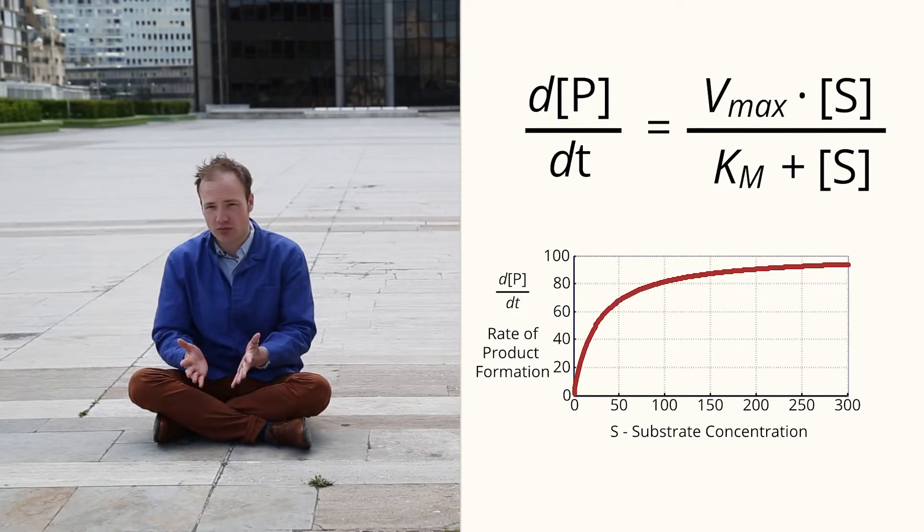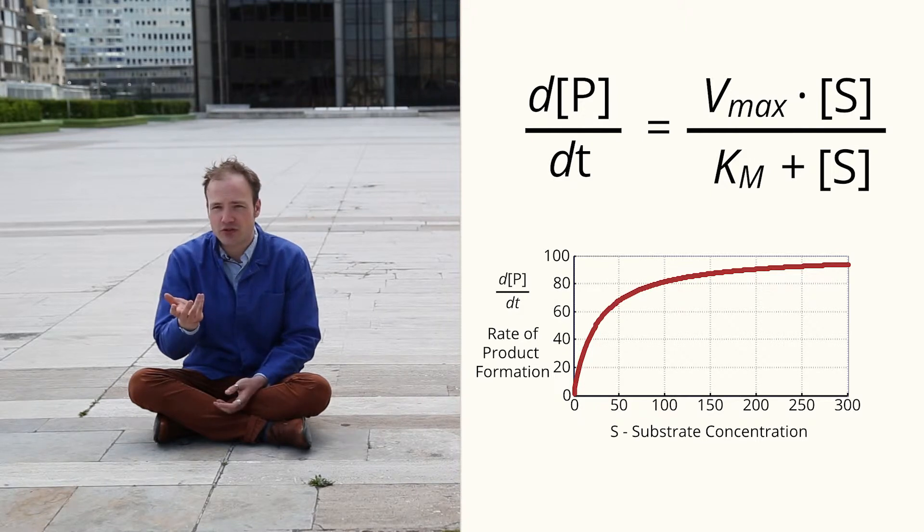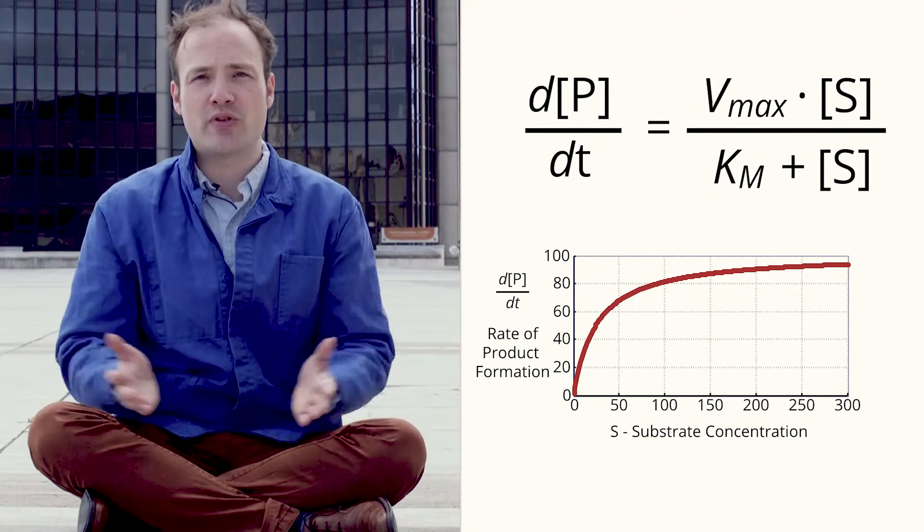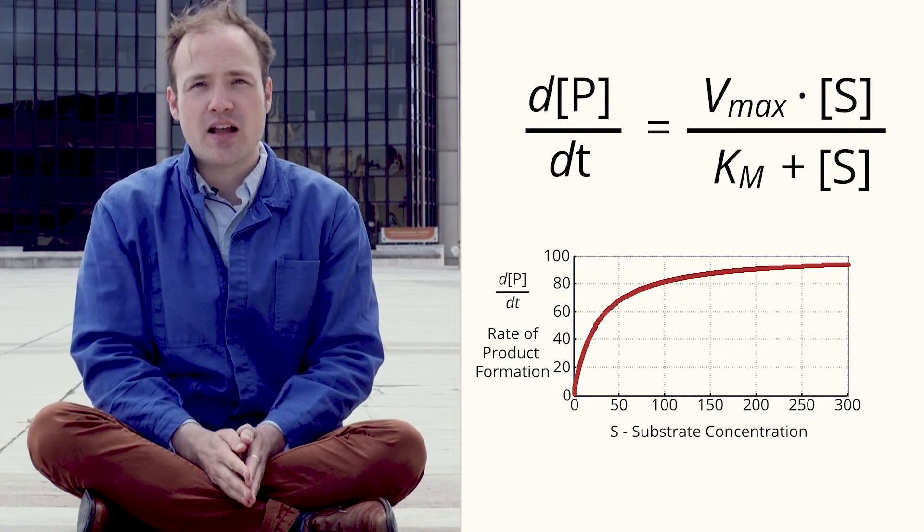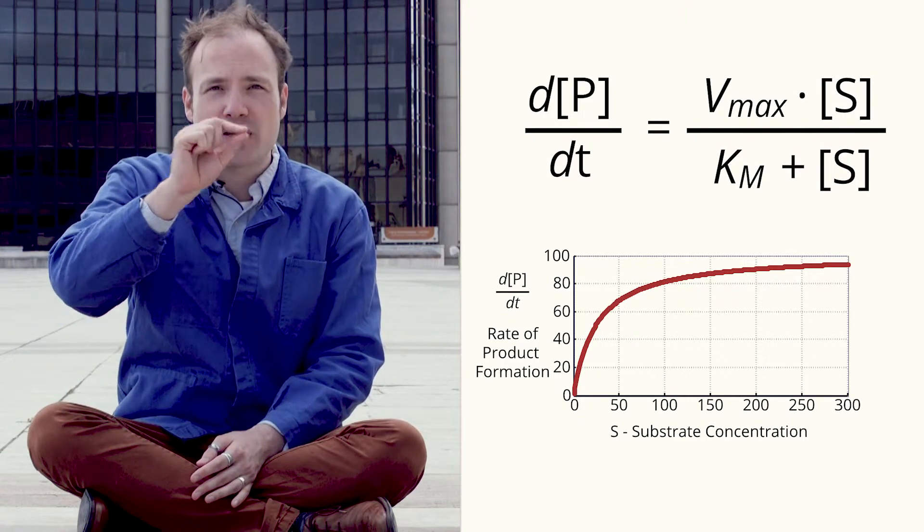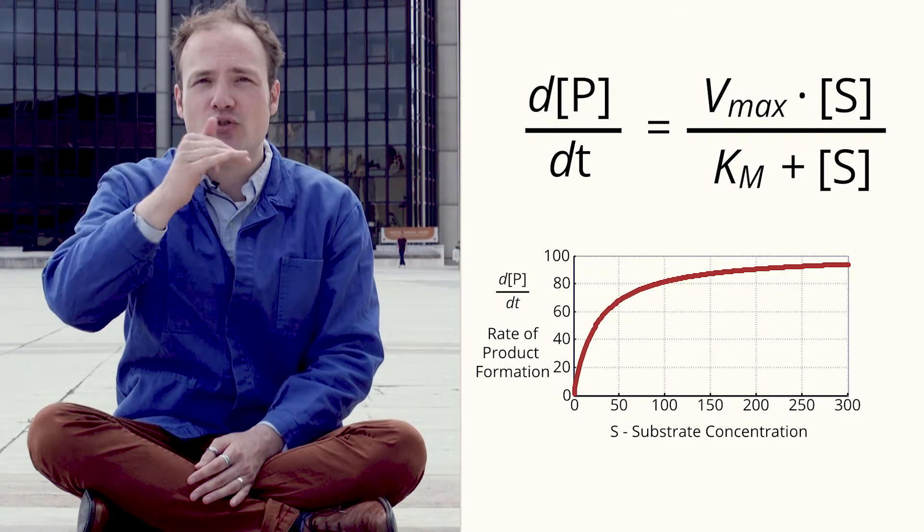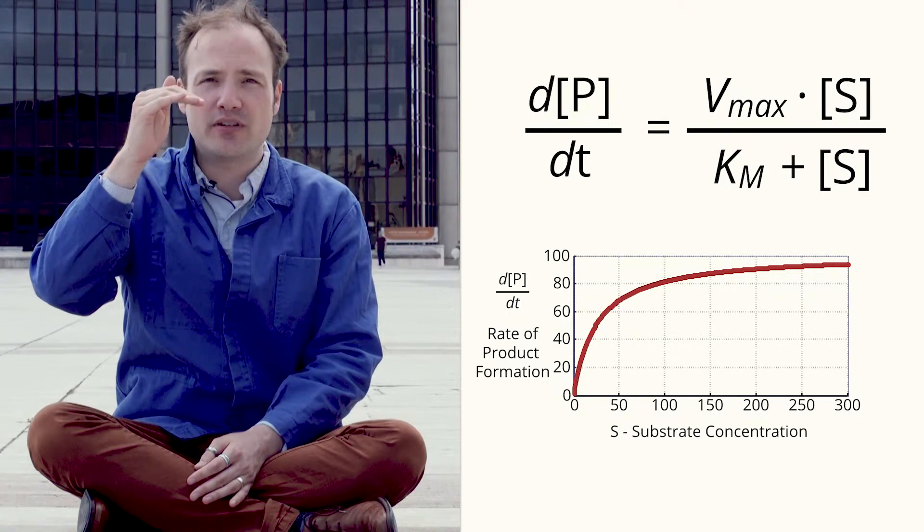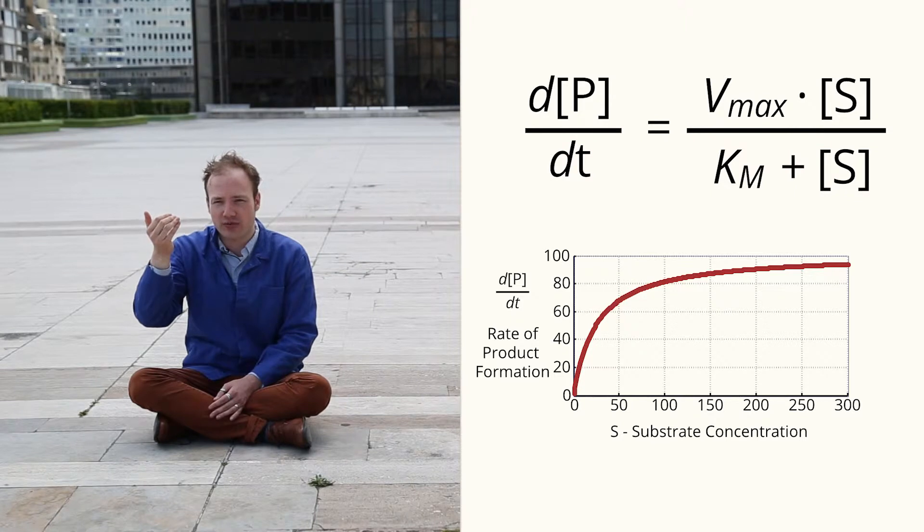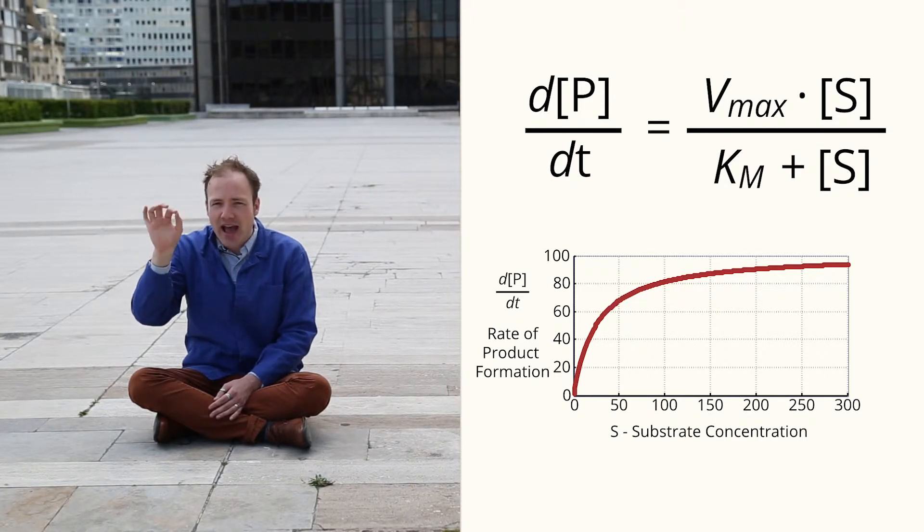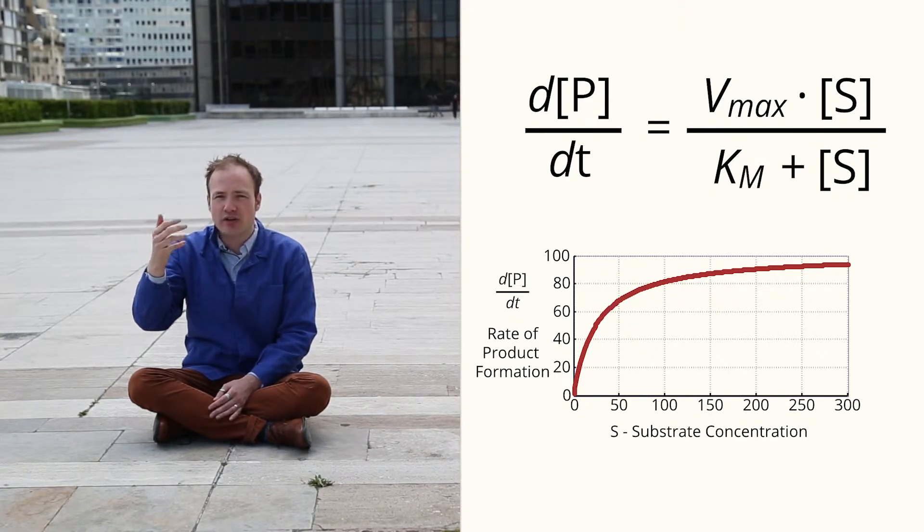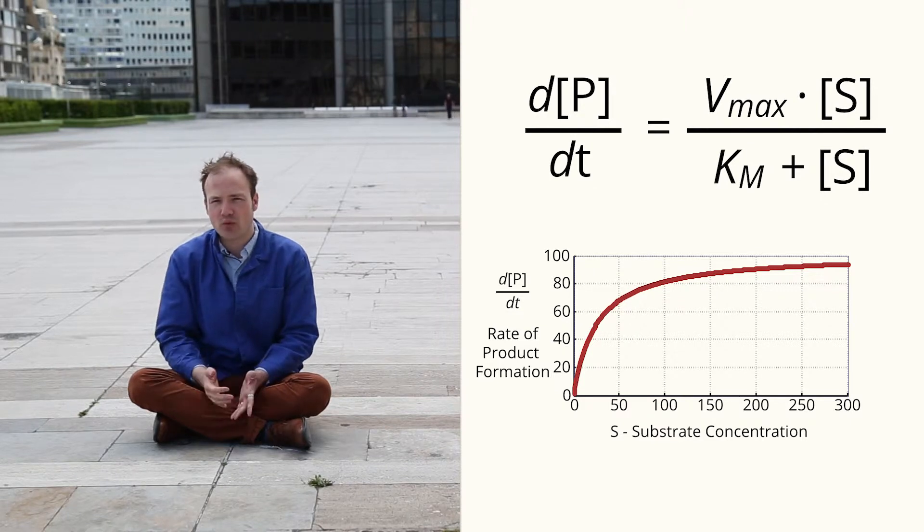We can start over here at zero. When the substrate concentration is zero, the product formation rate is obviously zero. As we add more and more substrate to the reaction, the rate of product formation increases, but the increases gradually slow down until eventually the curve levels off. At this point, adding more substrate no longer increases the rate of the reaction.